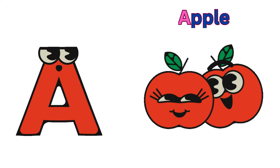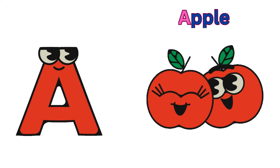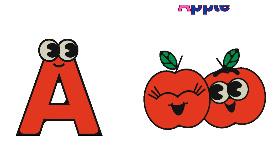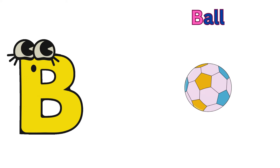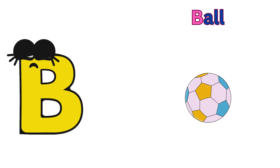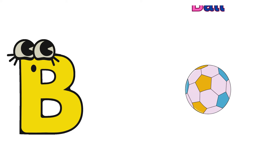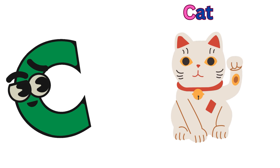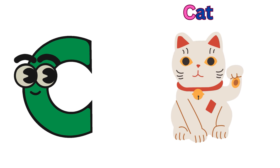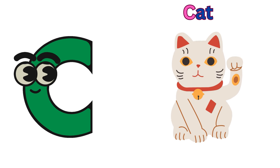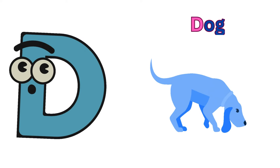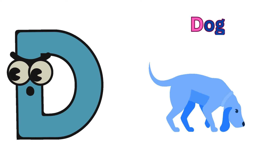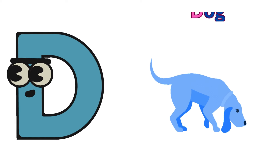A is for apple, a-a-apple. B is for ball, b-b-ball. C is for cat, c-c-cat. D is for doll, d-d-doll.